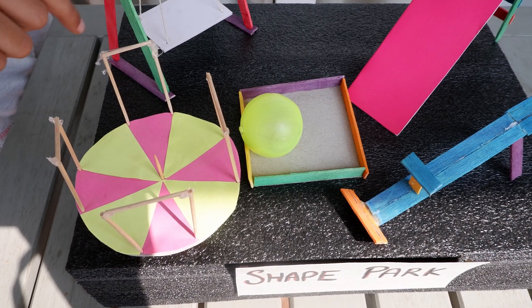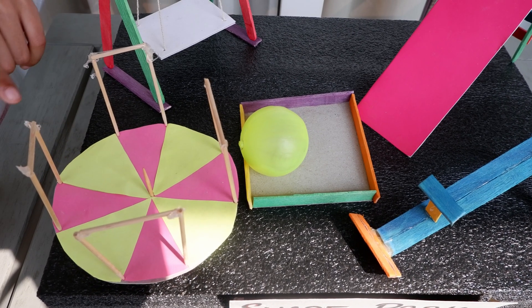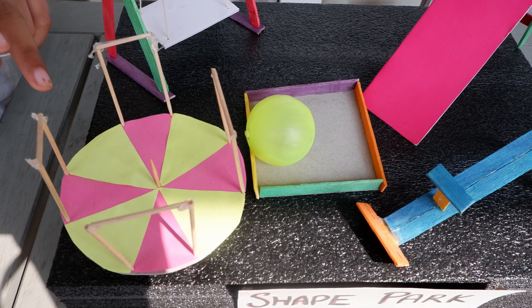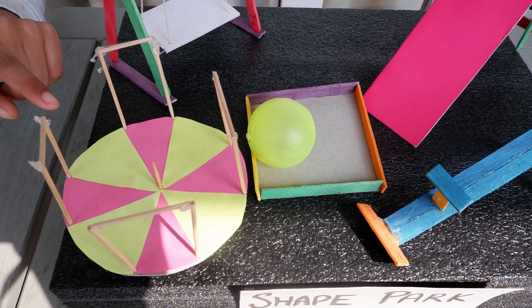Look at this merry-go-round. It is shaped like a circle. And a circle has zero sides and zero corners.